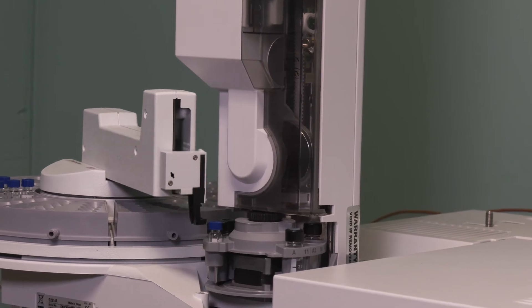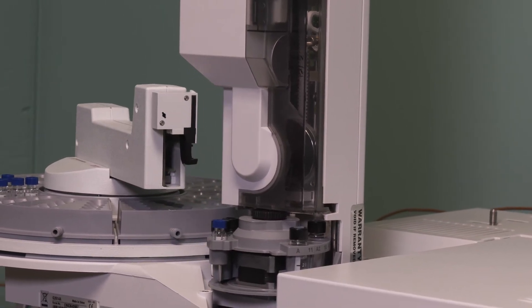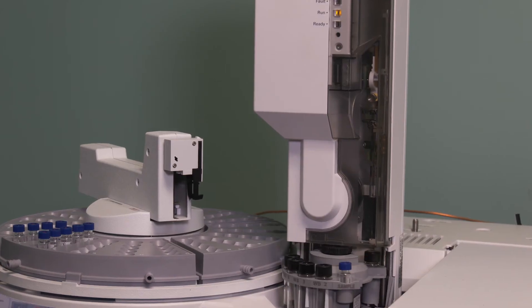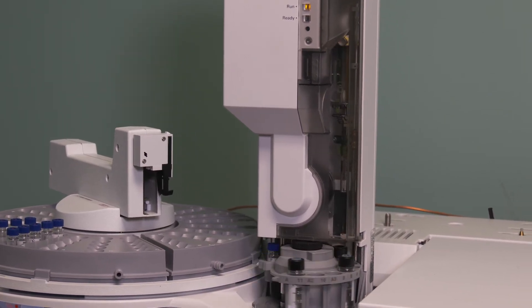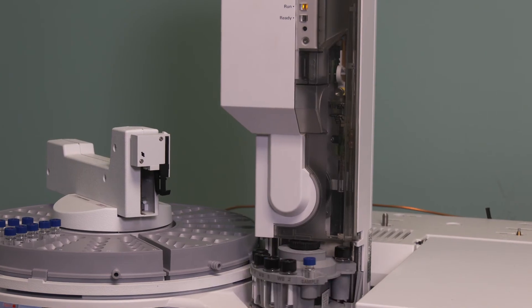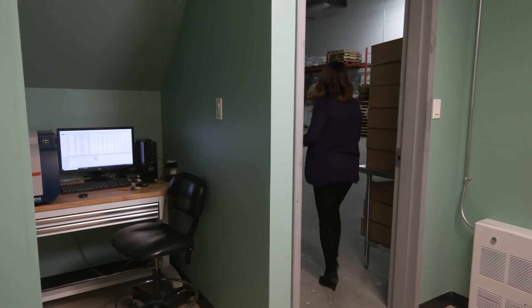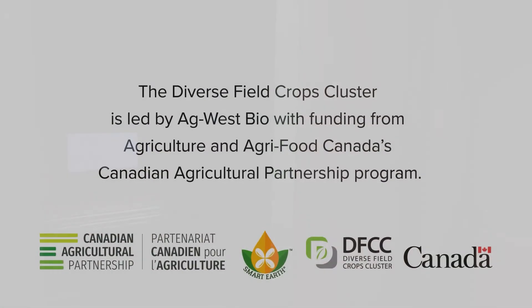We use this gas chromatography machine to analyze the complete fatty acid profile of our Camelina oil. This is a quality control measure that ensures that we are producing high-quality oil that contains the desired omega-3-6 ratio.